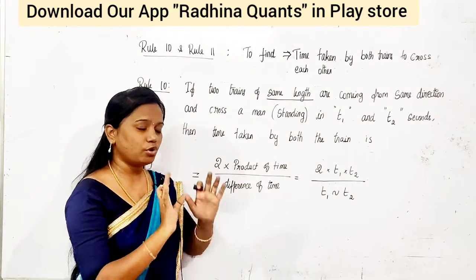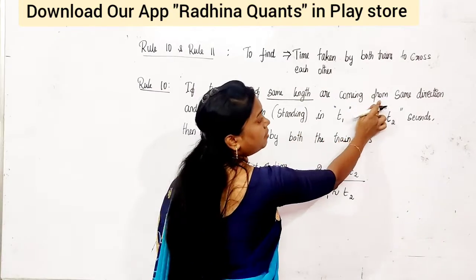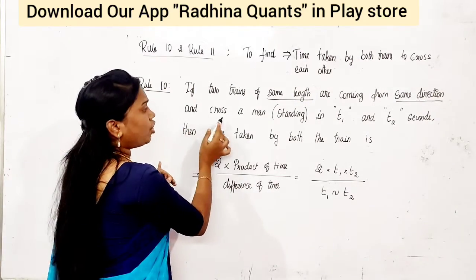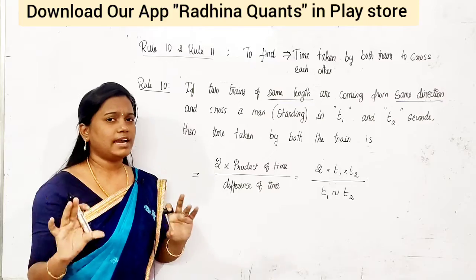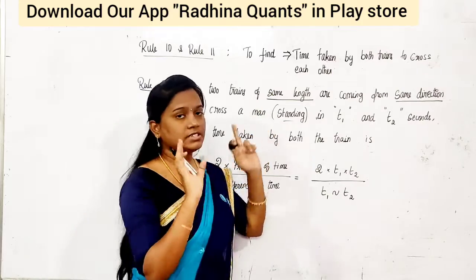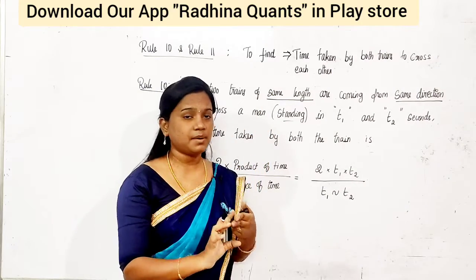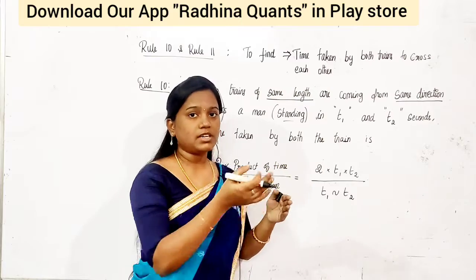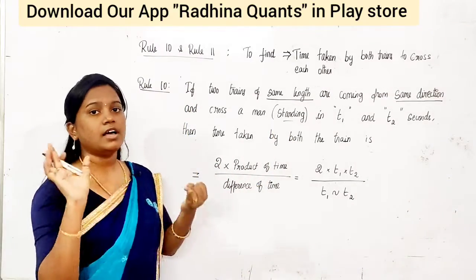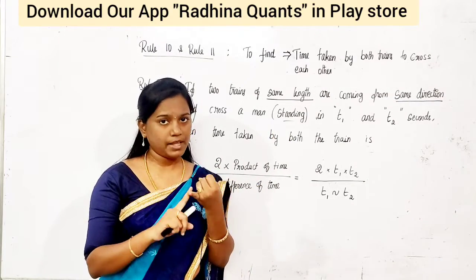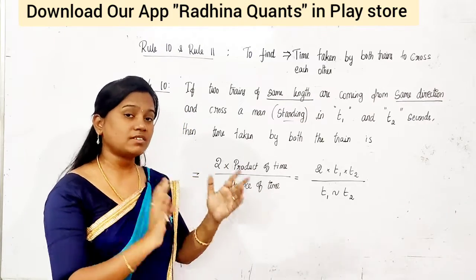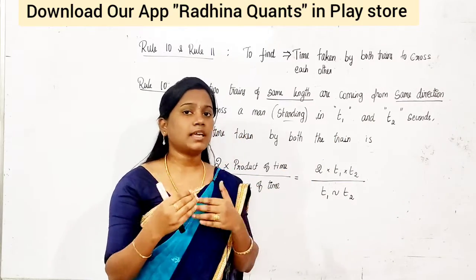This is the main condition of the rule: two trains are coming from the same direction and cross a standing man. How do you cross the first train? The man is crossed by the first train in T1 seconds, and the second train crosses the standing man in T2 seconds.